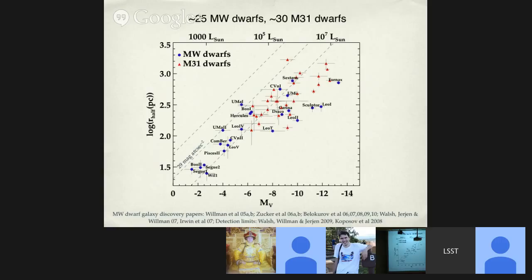I did my dissertation work designing an algorithm to find these sorts of objects in SDSS data. At the time I defended, we didn't know about any galaxy below about 10^5 solar luminosities — that part of the parameter space was completely empty. Now we know there are many more. Just in the last decade, there's now an entire field — conferences dedicated to what these things can teach us about galaxy formation at the very bottom of the hierarchy.